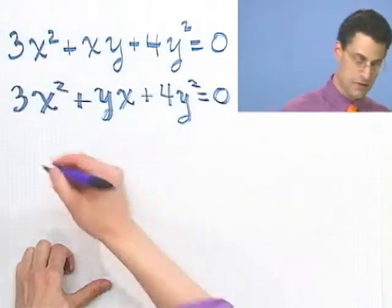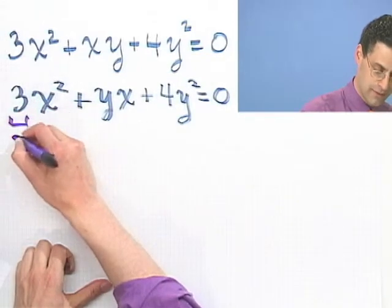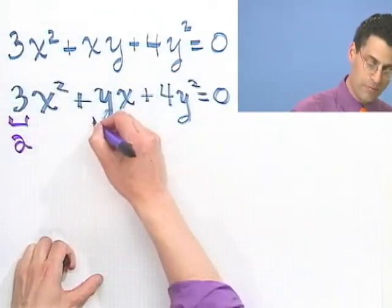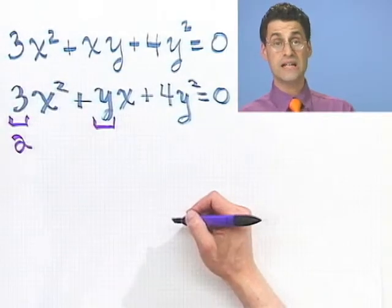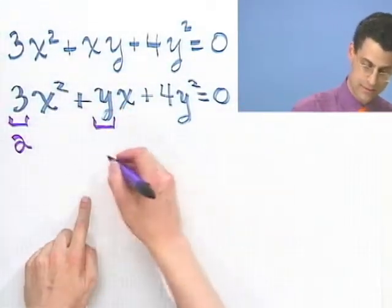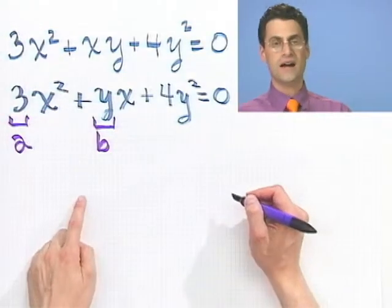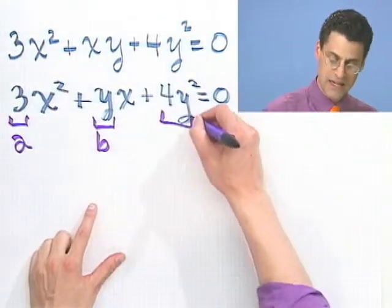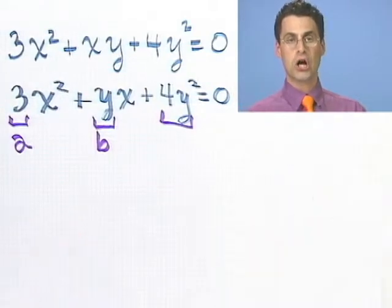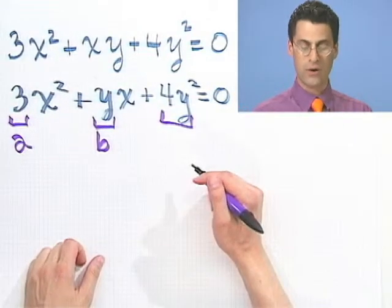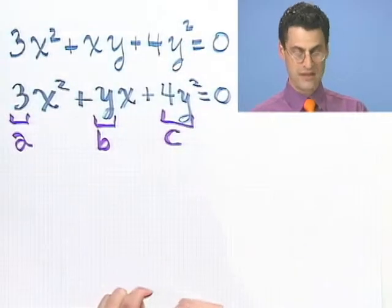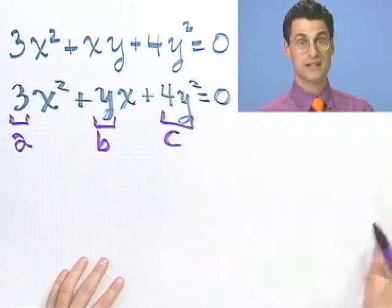The role of A is going to be played by 3. More exciting, the role of B is going to be y, because that's the thing multiplying the x. And finally, the role of C is going to be played by the entire, large 4y².